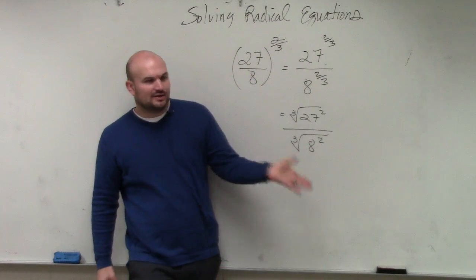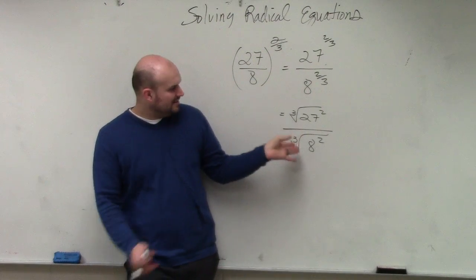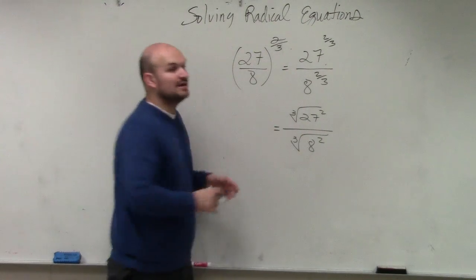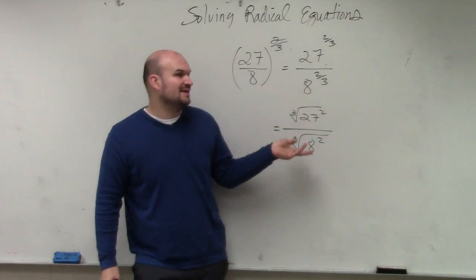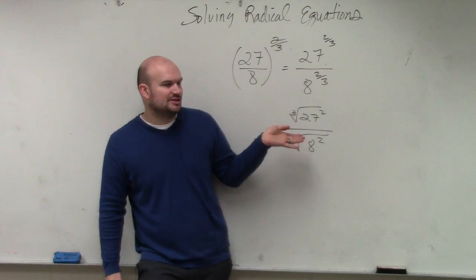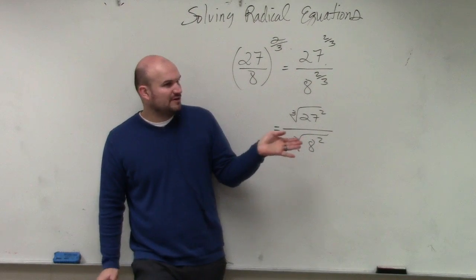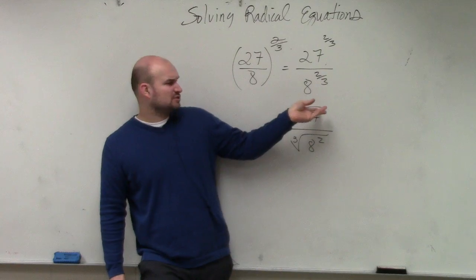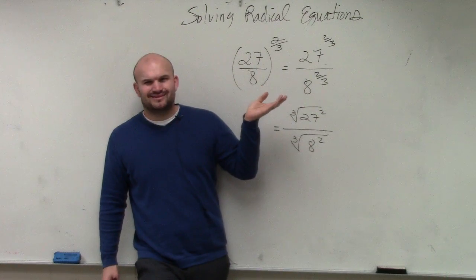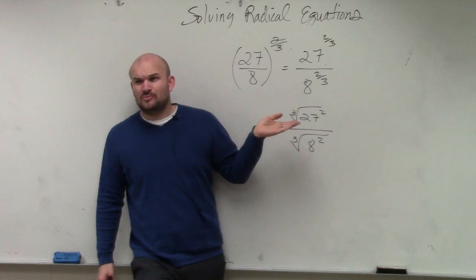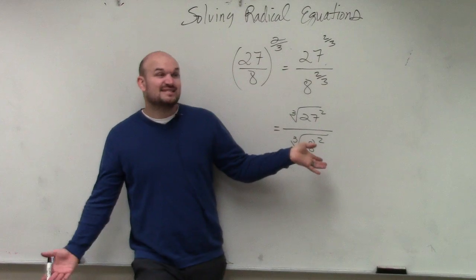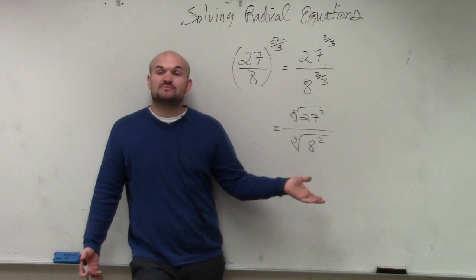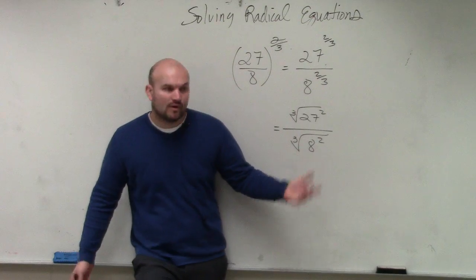In number 42, rewriting in this format makes it easier. However, do I really want to take 27 squared and then take the cube root of that number? That's really not helping. 8 squared is 64, and the cube root of 64 — you should know your cube numbers by now — that answer is 4.